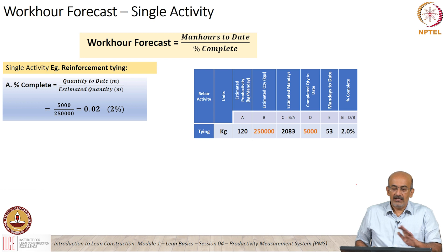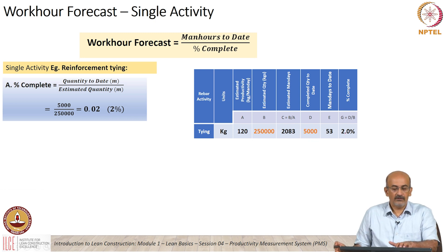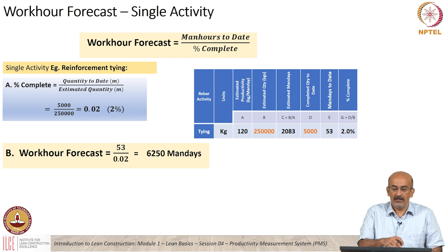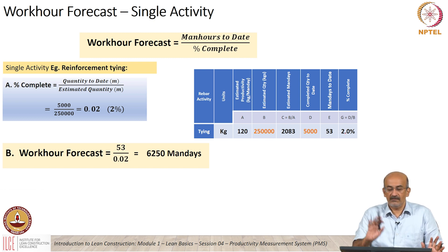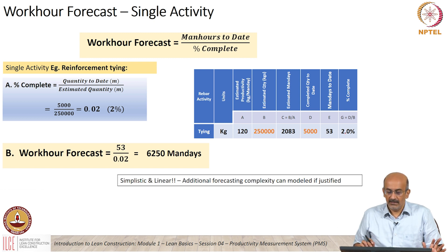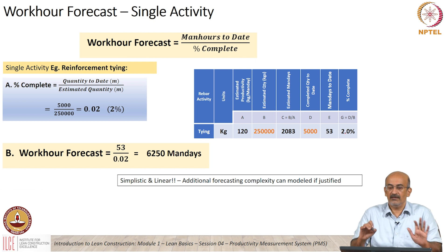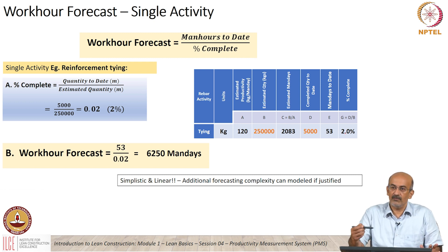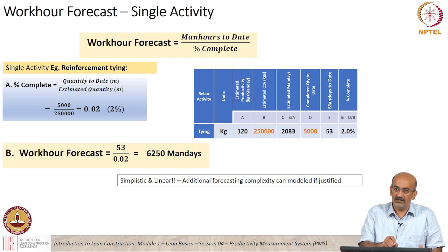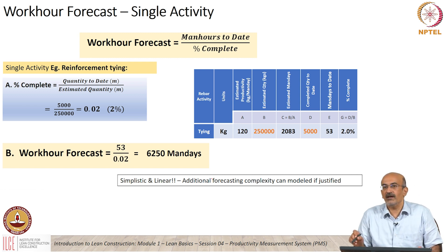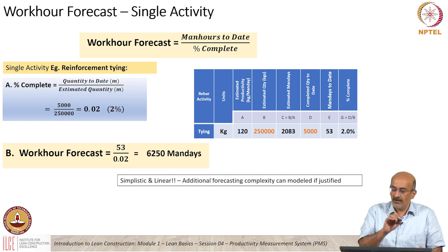We take reinforcement — specifically the tying of reinforcement as an example. This is the total estimated quantity and this is the quantity to date. Quantity to date divided by estimate shows it is only about 2 percent complete. The work hour forecast is 53 divided by 2 percent, which gives us the projected quantity. This is definitely simplistic and linear. The formula or approach remains the same, but the values will get more realistic as you get more data. The model itself can be more complicated if the data justifies it and the relevant factors are identified.